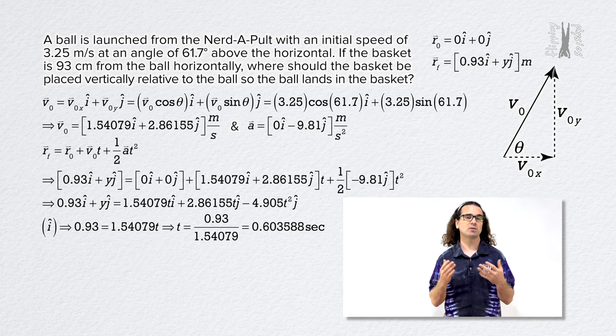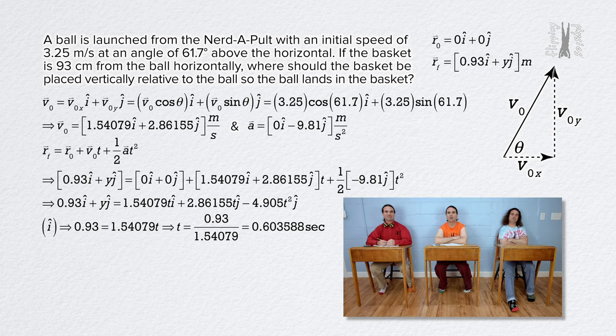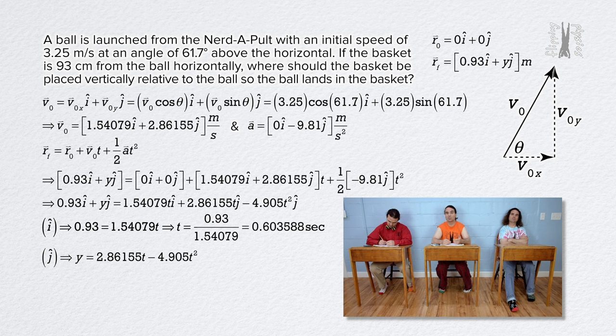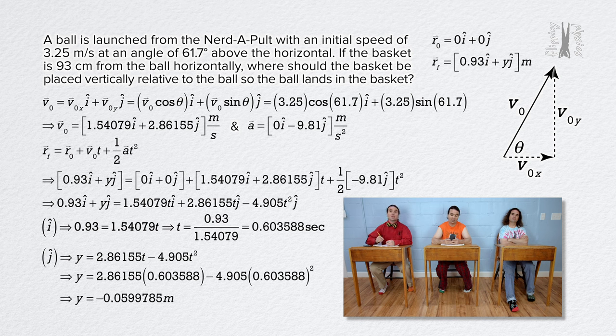Thanks, Bobby. Can you actually do the same thing with the y direction? Yeah. Isolating all the terms which have unit vector j in them gives us y equals 2.86155 time minus 4.905 times squared. And we just figured out the time. So substitute that in and we get negative 0.0599785 meters or that is negative 6.0 centimeters.